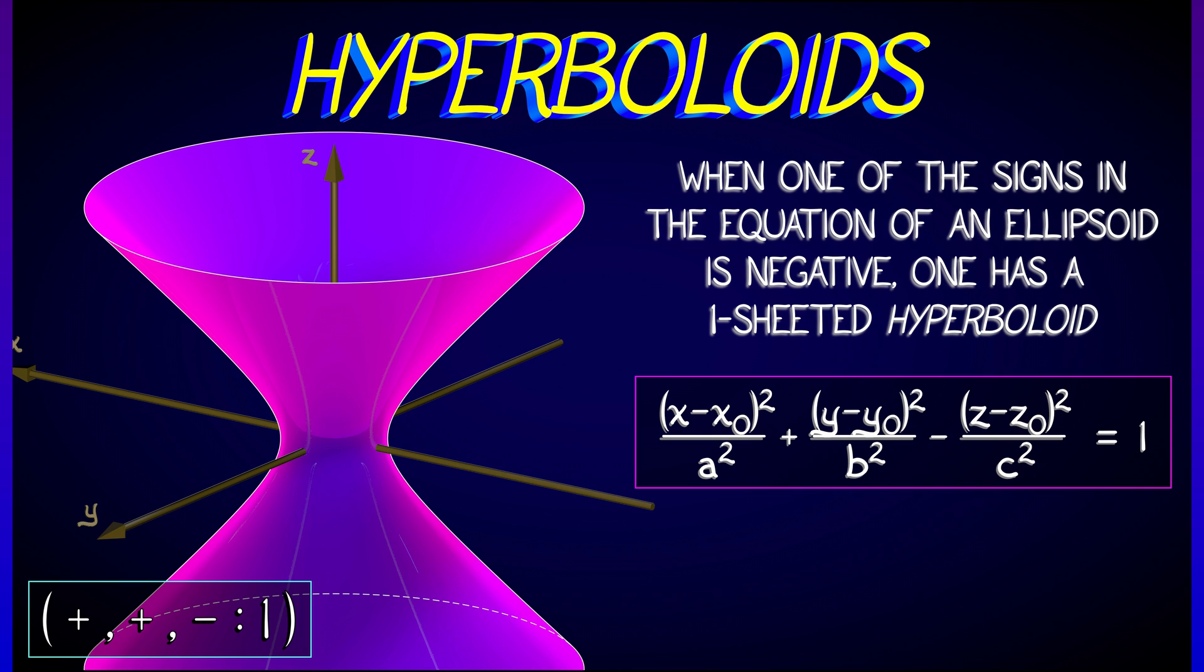It opens up out to infinity along the axis whose variable has that minus sign in front of it. Now this is called a one-sheeted hyperboloid. It is a connected surface, a very cool one at that.